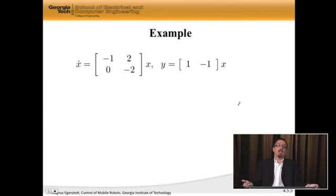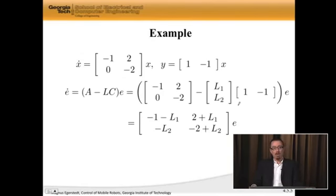Well, we want the real part of the eigenvalues to A minus LC to be strictly negative. So let's just pole place away. Okay. So here's an example. x dot equal to this, y is equal to that. Fine. Now, I want my error dynamics to be asymptotically stable.